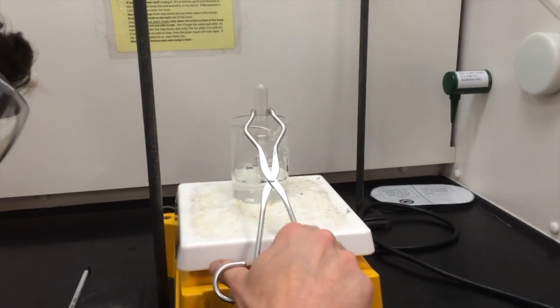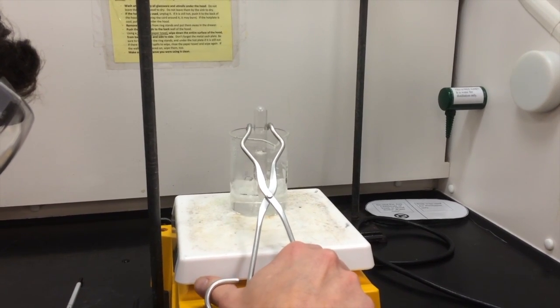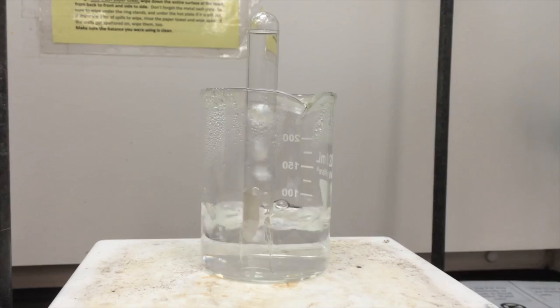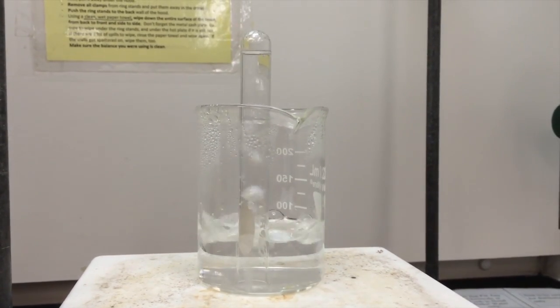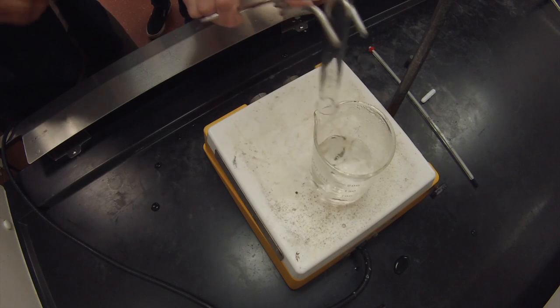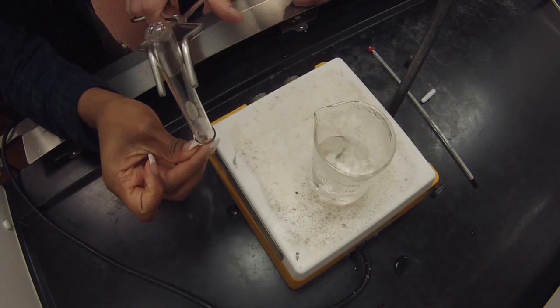We now want to start trapping some of the bubbles in the test tube. This might take some coaxing, but lifting and moving the test tube seems to work pretty well. You should see something like this. Once the tube is filled with gas, quickly remove it from the water and insert a lighted match inside the mouth of the test tube.